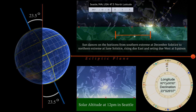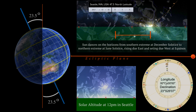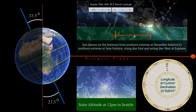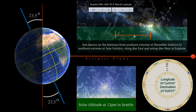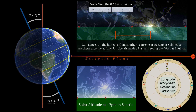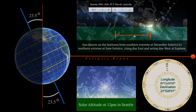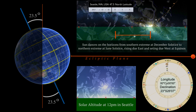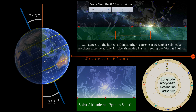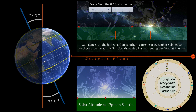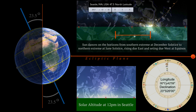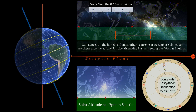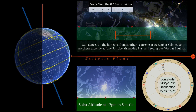We begin at December solstice when Earth's southern axis is leaning toward the light. This is summer solstice for the southern hemisphere and winter solstice for the northern hemisphere. At December solstice, when the Sun enters the sign of Capricorn, there are no midday shadows at earthly locations situated at 23 and a half degrees south latitude — the Tropic of Capricorn. As a rule, there are no midday shadows for tropical locations on Earth whose latitude equals the Sun's declination.